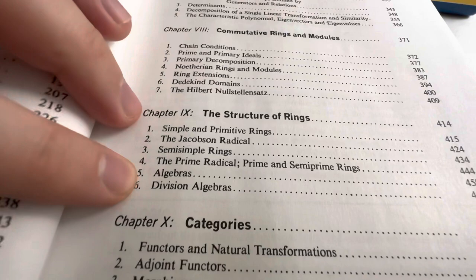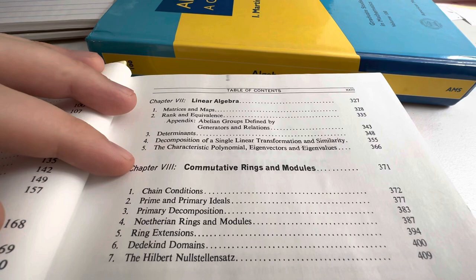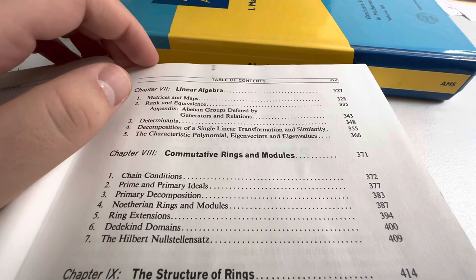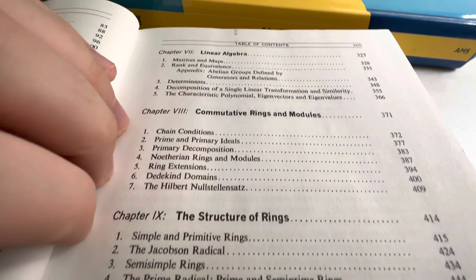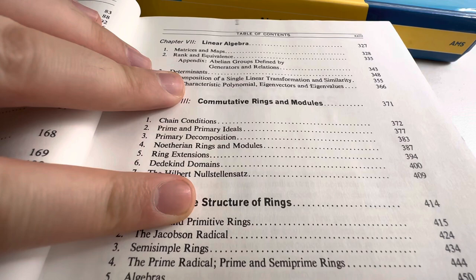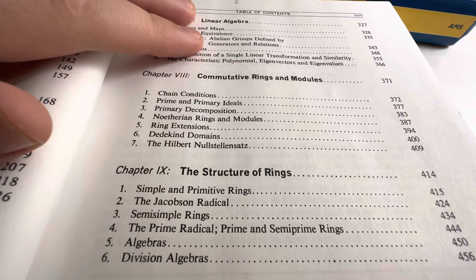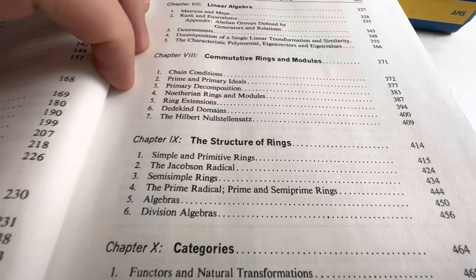Linear Algebra. They have the entire course, Linear Algebra, in one chapter. And that chapter is 330 to 366. So it's a little bit more than 30 pages, 30, 40 pages, somewhere in there. Commutative Rings and Modules. Hilbert Noetherian. I don't really know what that is. Structure of Rings. Categories. I've heard this theory of category theory before. Don't know what it is. Anyway, so then they go through the fundamentals.